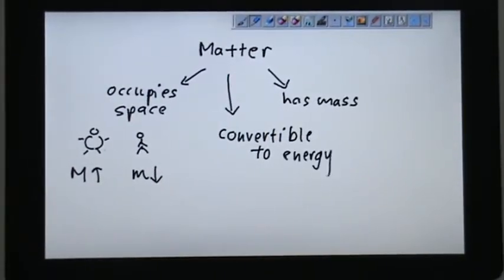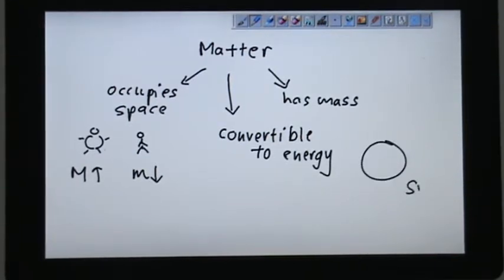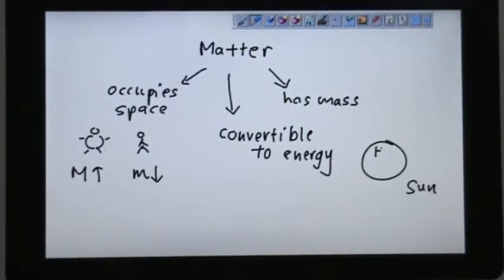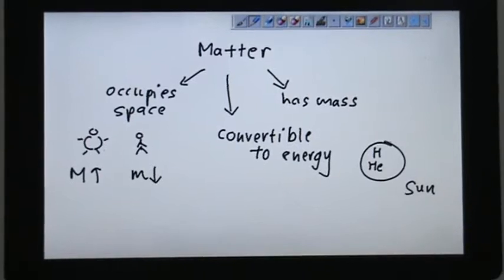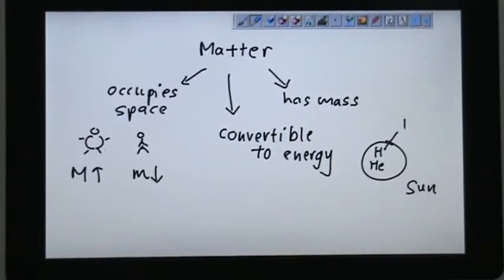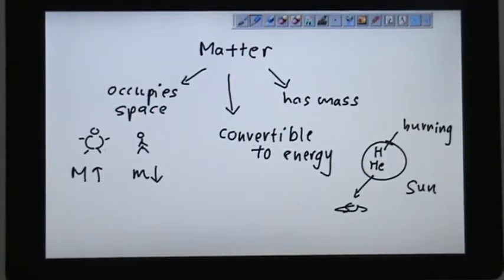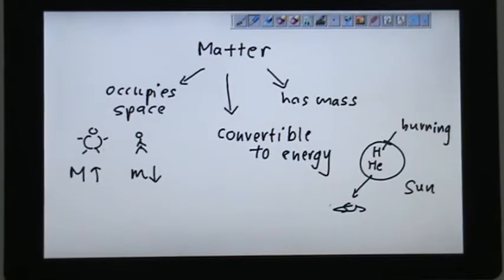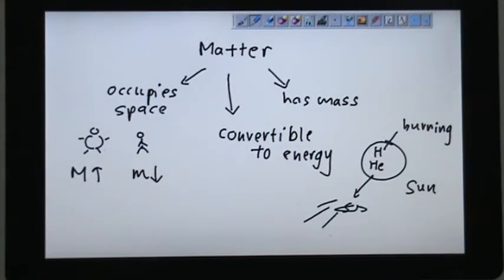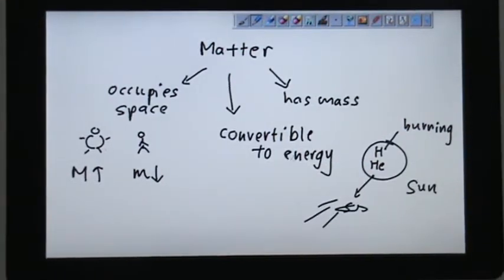What really happens in the sun is that a lot of hydrogen and helium gas or particles, they are actually burning. After they burn, they actually release energy. This is how we get our sunlight, the thermal energy from the sun shining through the earth. So it's convertible to energy.